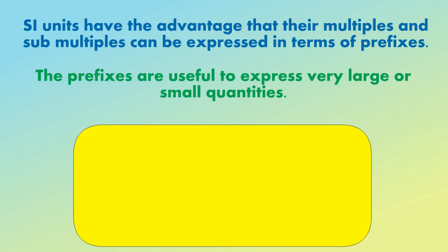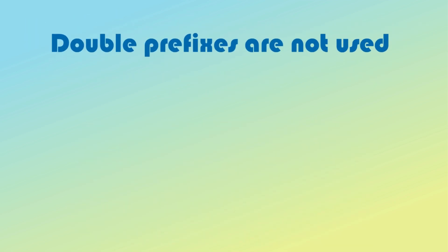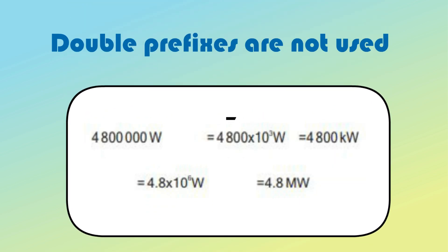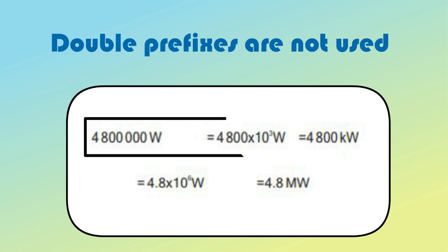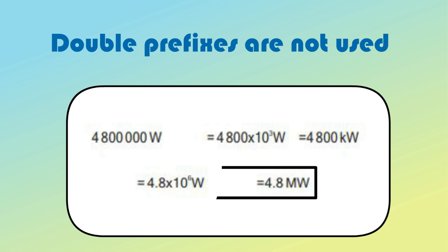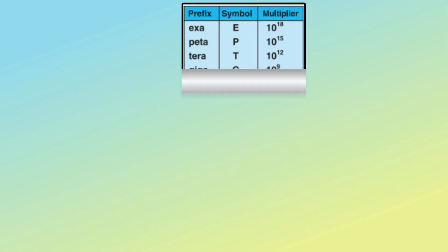For example, divide 20,000 grams by 1,000 to express it in kilograms, since kilo represents 10 raised to the power 3, or 1,000. However, double prefixes are not used. For example, in the below case, no prefix is used with kilogram since it already contains the prefix kilo. So mega has to be used. To understand which prefix to use in a specific scenario, you have to learn the following table.